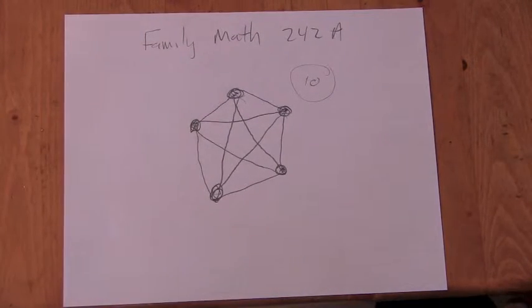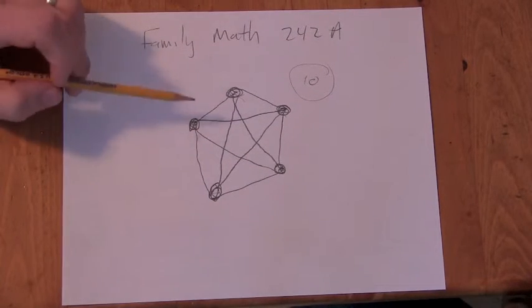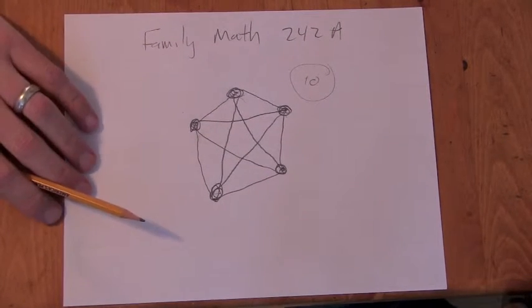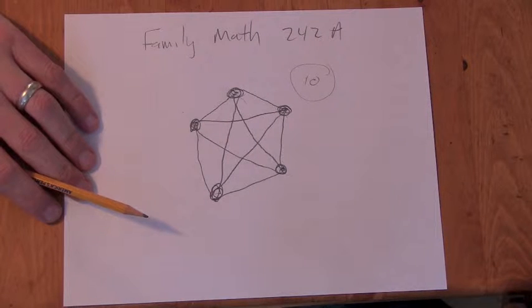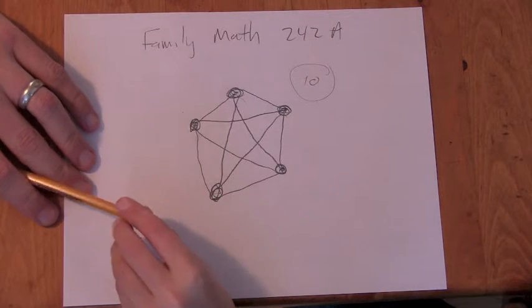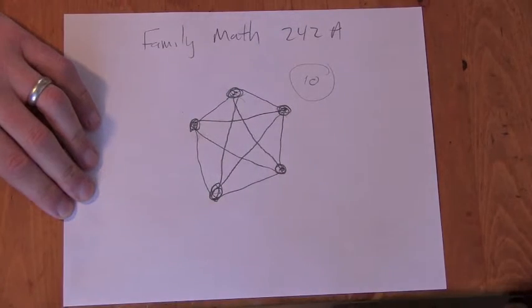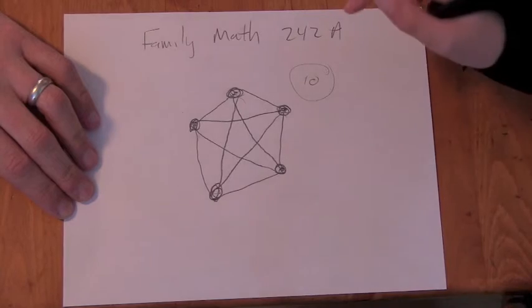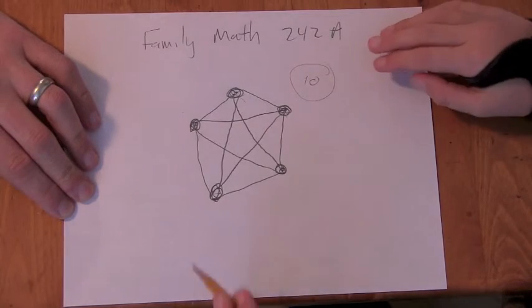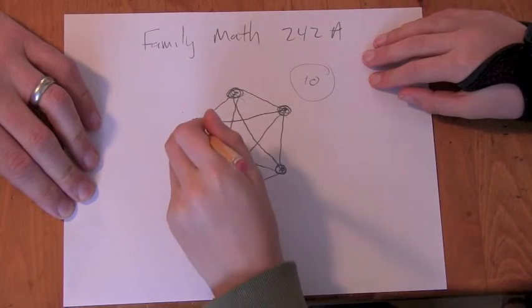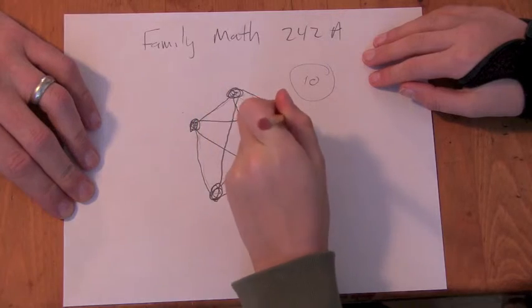What are some things that you notice about this picture that help you understand the number of line segments? Well, you could see that there's actually four lines coming out from every point.